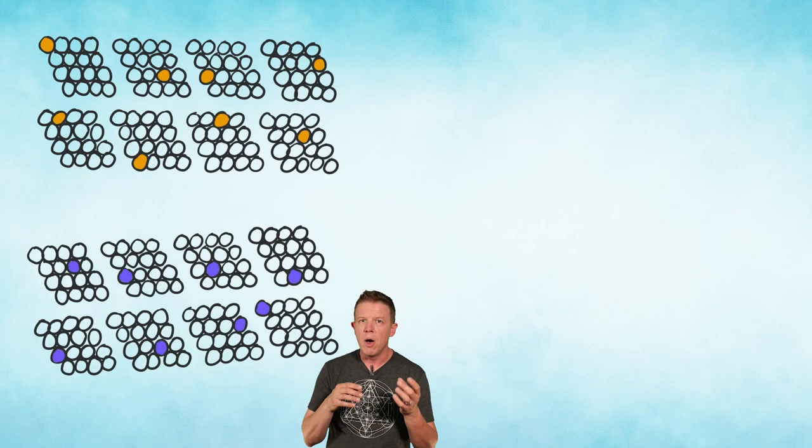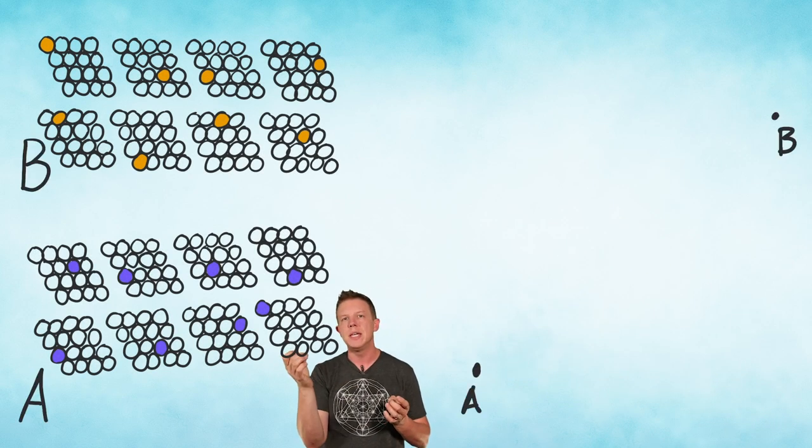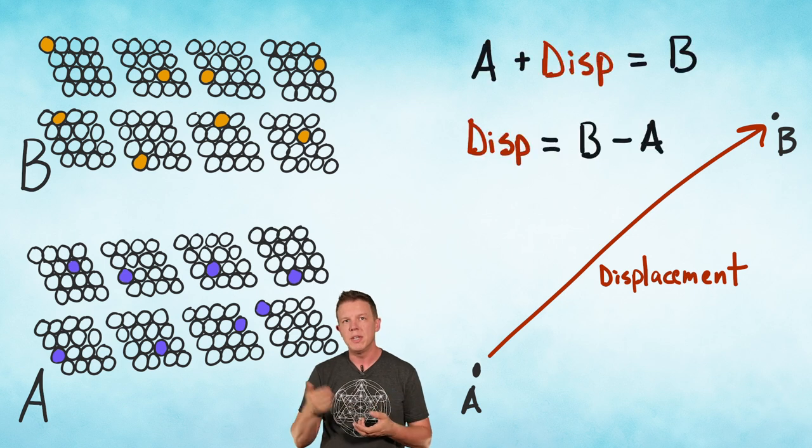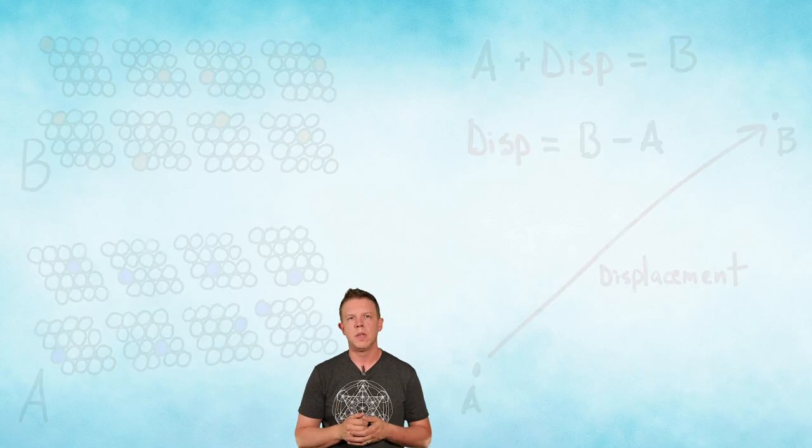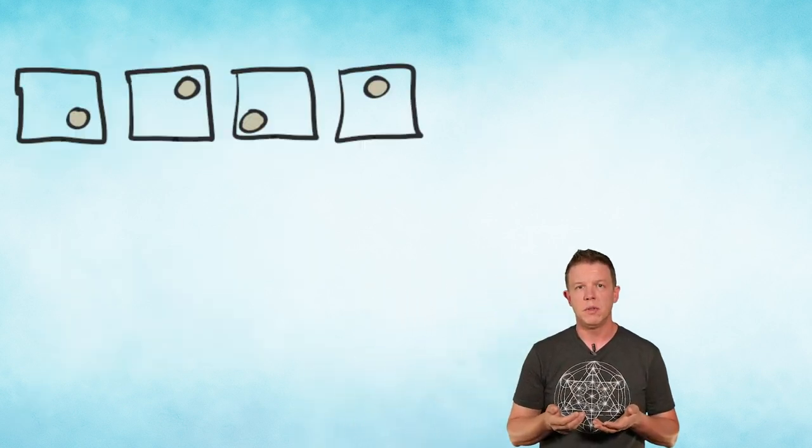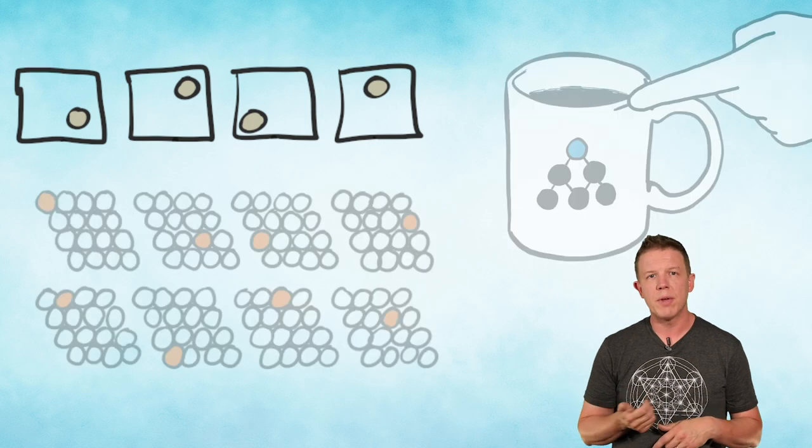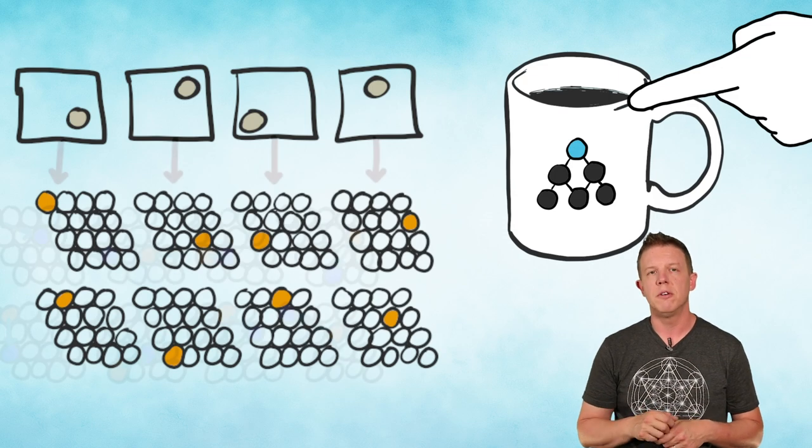So as we move from location A to location B, we can say that A plus some displacement equals B. If we want to know what that displacement is, we can simply solve for the displacement. Once you have a displacement, you can apply it to any other location representation to cause a phase shift.